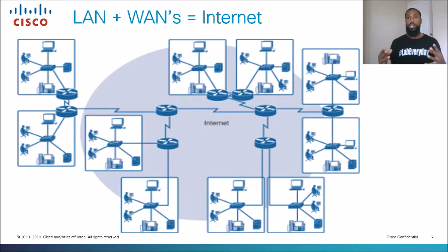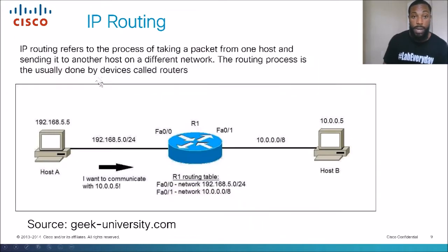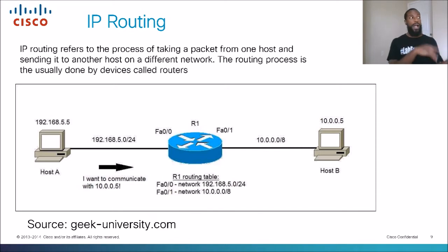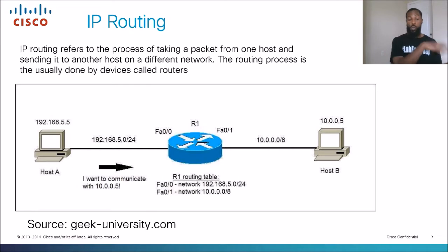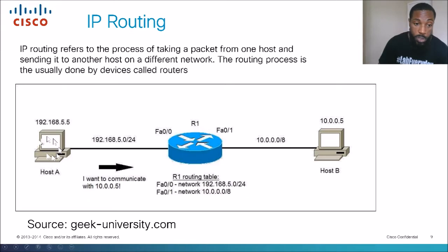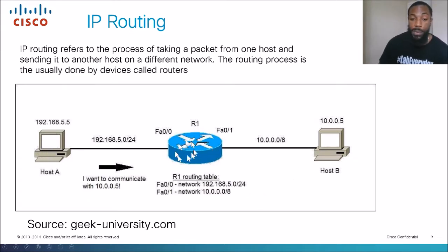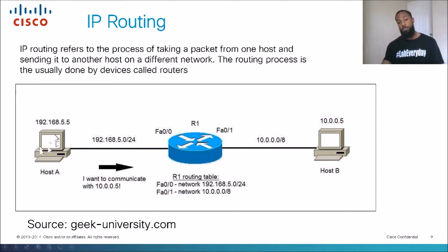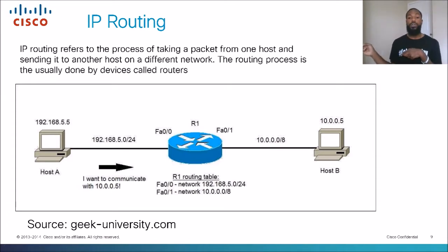How do the packets — the small pieces of information — travel through the internet? This is done with IP routing. That's what routers do — they route IP packets. IP routing refers to the process of taking a packet from one host or PC and sending it off to a different network. We've got host A and computer B, with the hockey puck router — R1 — in the middle. When we need to take a packet from one PC and talk to another PC, we are routing the packets. That's what a router does — that's why they call it a router.